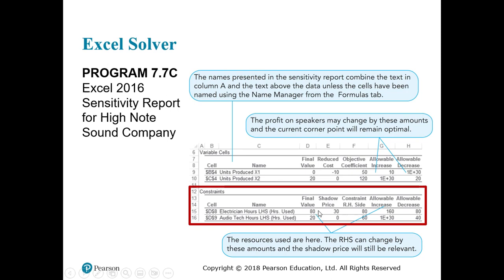The shadow price only applies when there is no slack, because no slack means those hours are fully utilized and genuinely contribute to profit. For audio technician time, we're only using 20 out of 60 — there's a slack of 40 — so those technicians are not adding much value to profit, which is why the shadow price is zero there. The key takeaway is understanding how to interpret the shadow price. Good luck — hopefully this is clear.